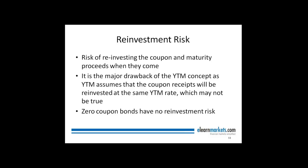Zero coupon bonds have no reinvestment risk. These bonds do not pay any periodic coupon interest — the yield is calculated as a cumulative return received at maturity. For example, if you invest in a zero coupon bond at a price of 38 rupees and receive 100 rupees at maturity, the 62 rupees accumulated gives you the return, from which you can calculate the bond's yield. Since there are no periodic coupon inflows, there is nothing to reinvest, eliminating reinvestment risk entirely.